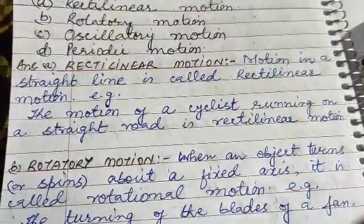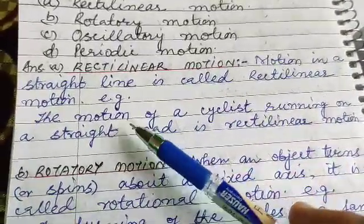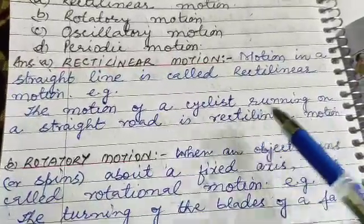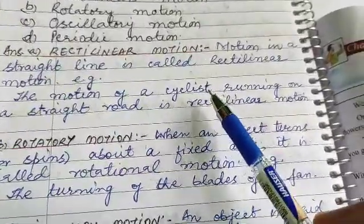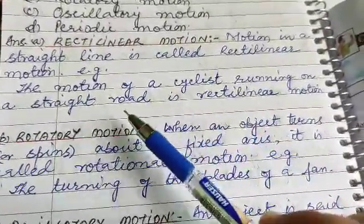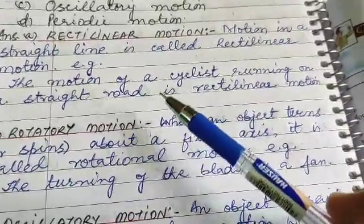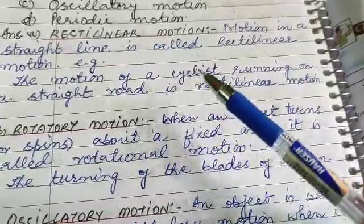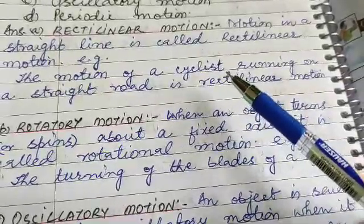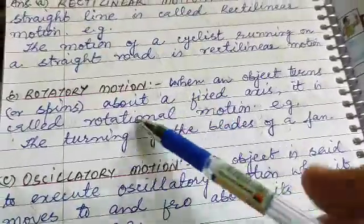Example of rectilinear motion: the motion of a cyclist running on a straight road is rectilinear motion. Also, a March past by soldiers or police — that is also rectilinear motion, as they move in a straight line.